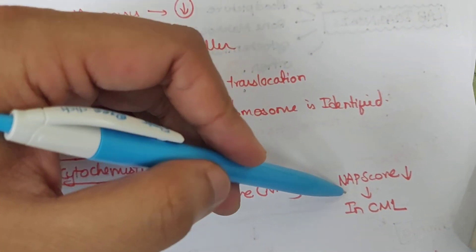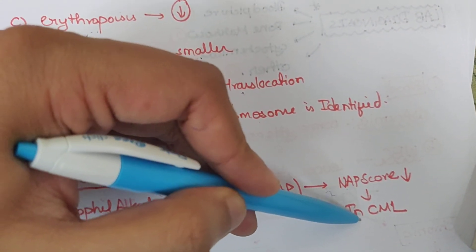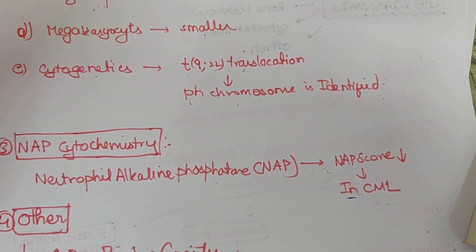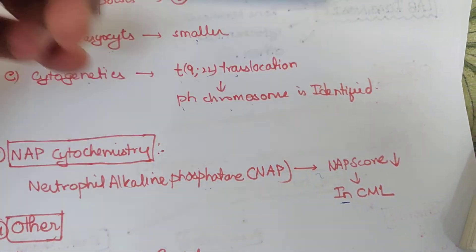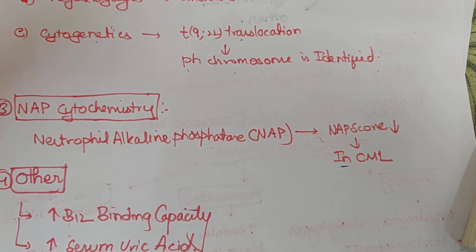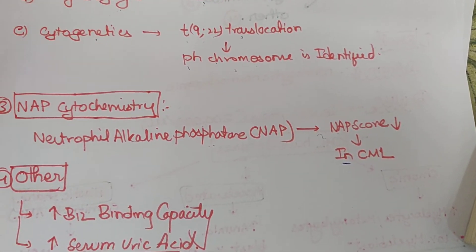NAP score is generally low in CML. But in leukemoid reaction the NAP score is high. So we can differentiate between CML and leukemoid reaction in this way.